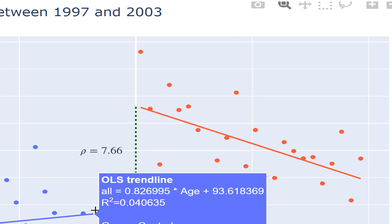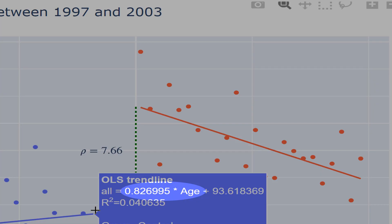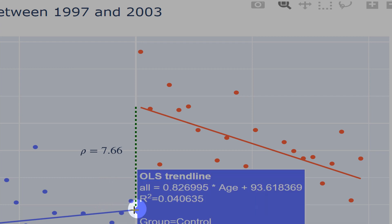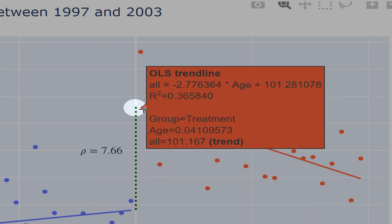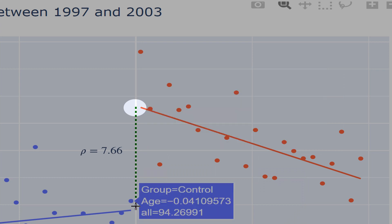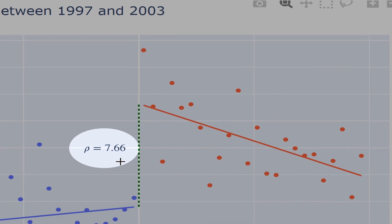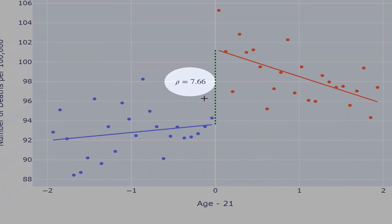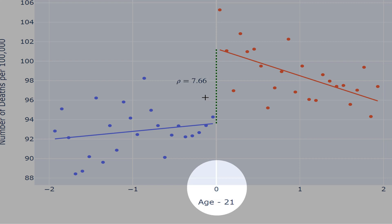And we have the same for the blue line. See that the slope is 0.82, and the intercept here is 93.61, that is this point here. If you take this intercept here minus this intercept here, you get a rho that is 7.66. That means 7.6 more American dies in the day of the birthday, 21.